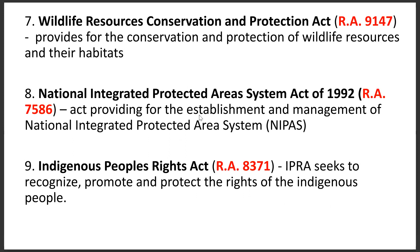Number seven is the Wildlife Resources Conservation and Protection Act, or RA 9147. This act provides for the conservation and protection of wildlife resources in their habitat, especially protecting our protected areas in order to conserve and protect our wild flora and fauna within those particular enclosures or protected areas.